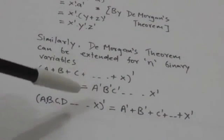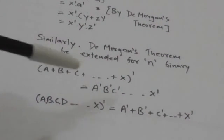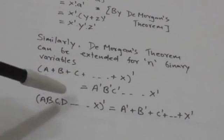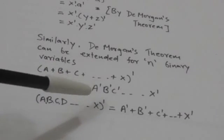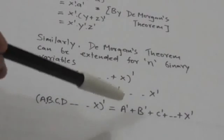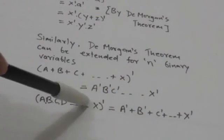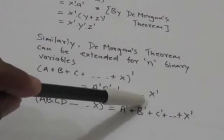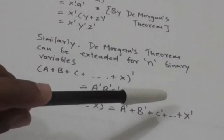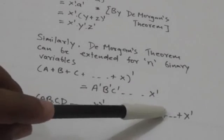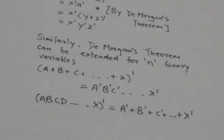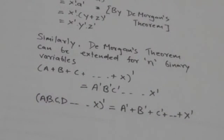The complement of A AND B AND C AND D and so on up to X will be equal to A complement OR B complement OR C complement and so on up to X complement. Thank you very much.